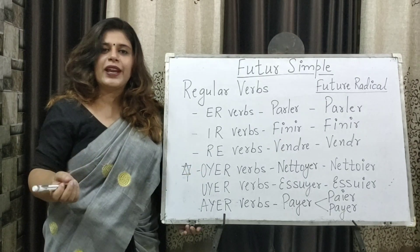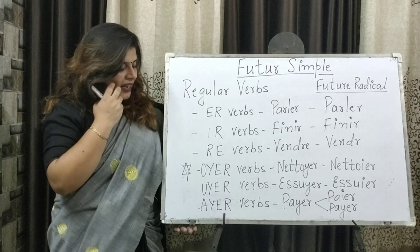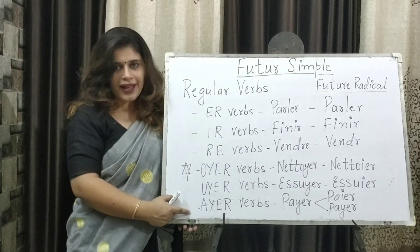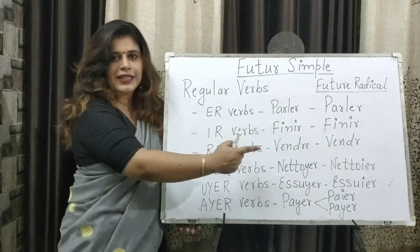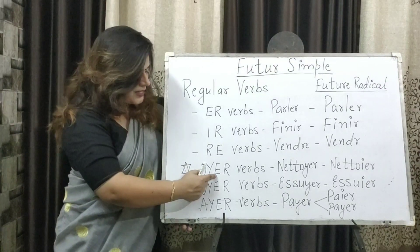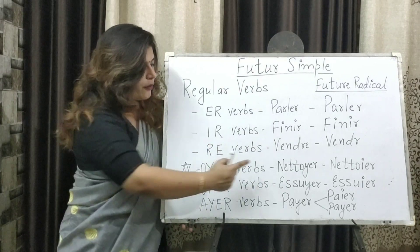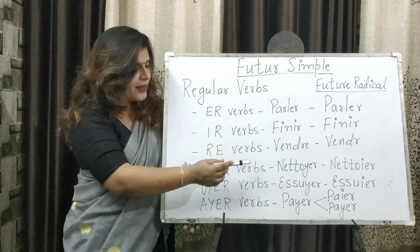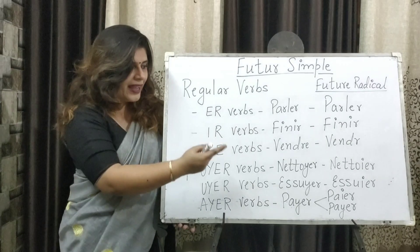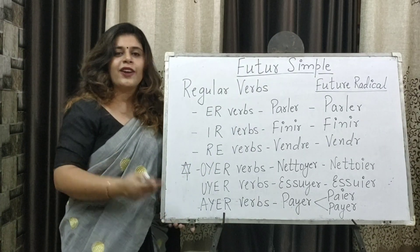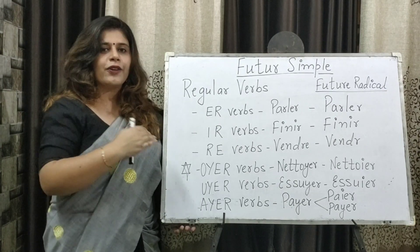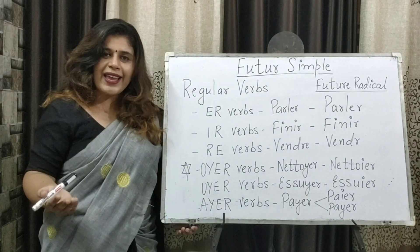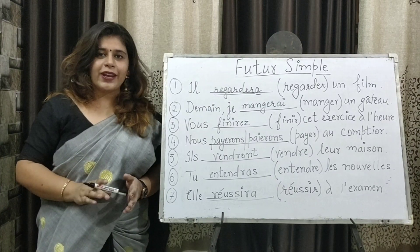Further categorizing within the ER family, we have OYER, UYER, and AYER verbs. They all follow the ER rule — nothing is dropped — but the Y changes into an I. For example, nettoyer changes spelling to nettoiER. For a UYER verb, essuyer changes to essuiER. Lastly, for AYER verbs, both forms are acceptable: the Y can stay or change to I. So payer can be written as payER or paieER, and both are considered correct.